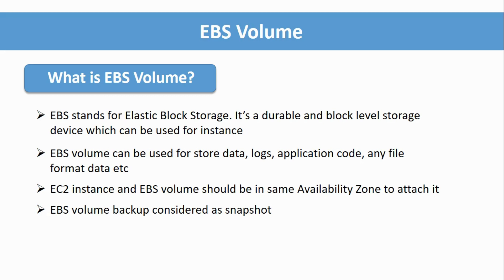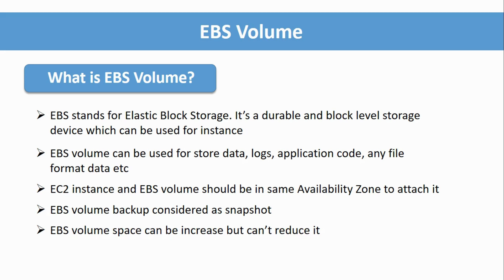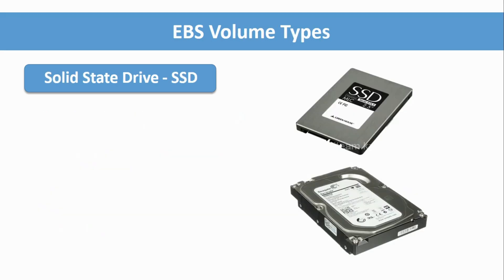When we explore EC2 services from the left side, we will find the AMIs options where a snapshot option is available, which is a backup of the EBS volume. For EBS volume size limitations, we can increase the size any time without any downtime, but we can't reduce it. So note this point: we can increase any time but cannot reduce the size.